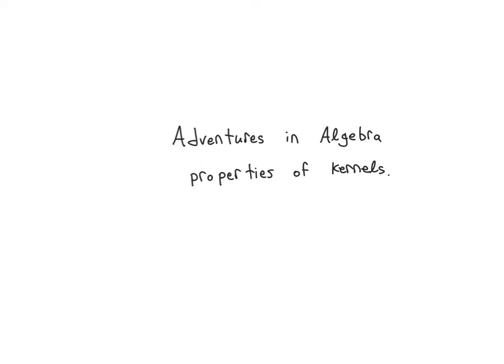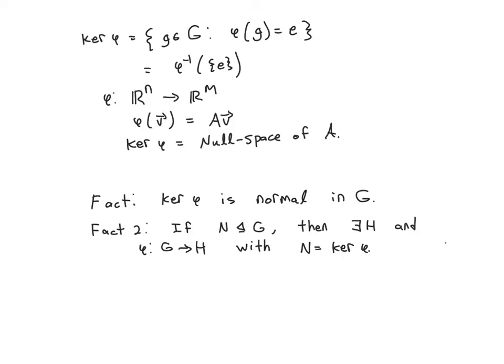In this video we're going to study kernels and prove some properties about kernels of homomorphisms. Given a group homomorphism from G to H, the kernel of phi is the set of elements in the domain such that their image is the identity in the codomain — so phi of g equals e. In other words, it's the preimage of the identity element.